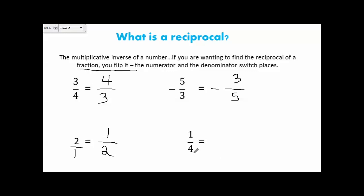Last but not least, I have 1 fourth. Again, finding the reciprocal, my denominator becomes my numerator, my numerator becomes my denominator. 4 over 1 is the same thing as 4.